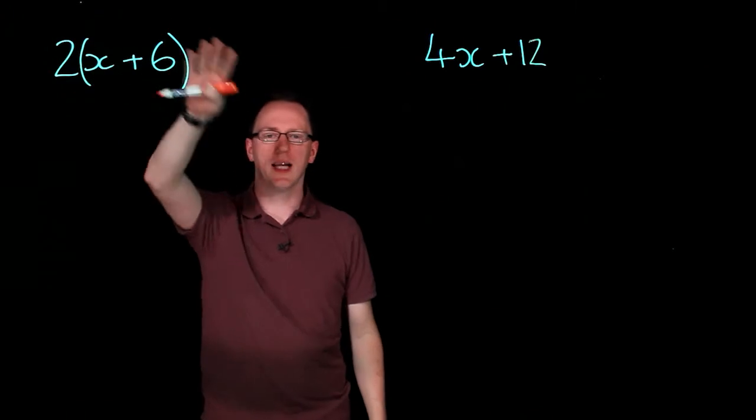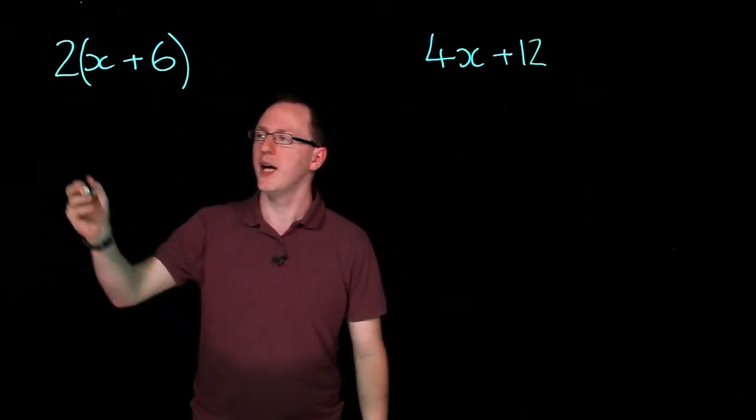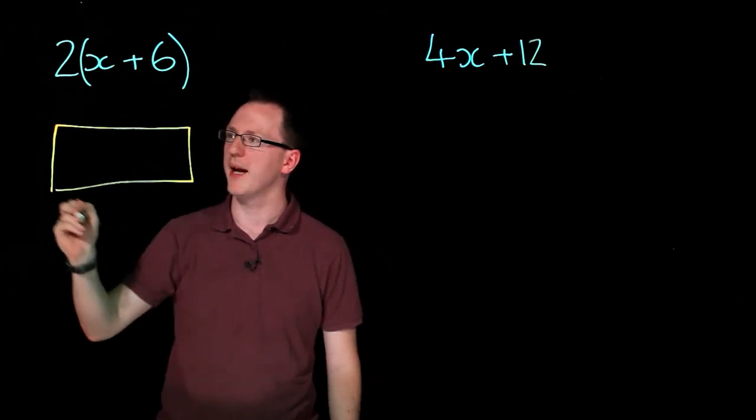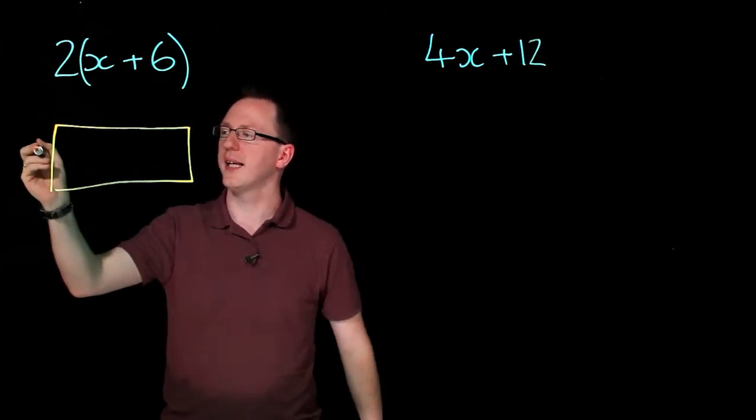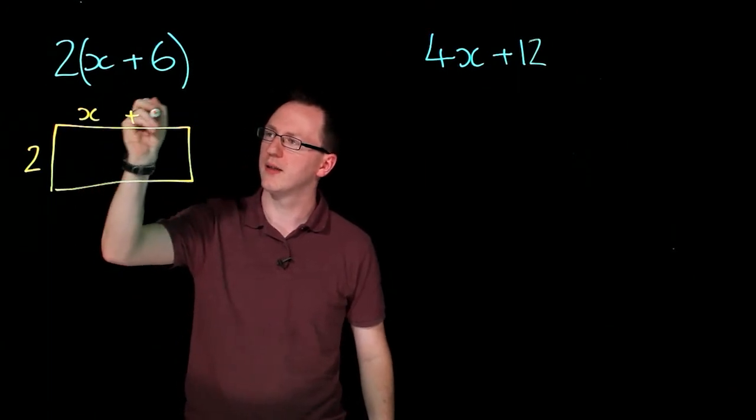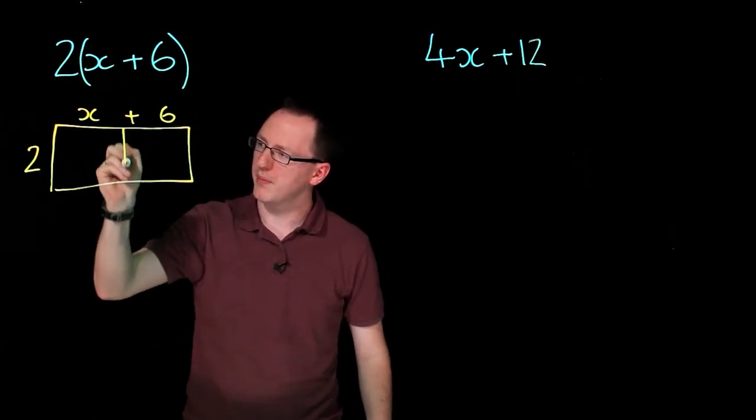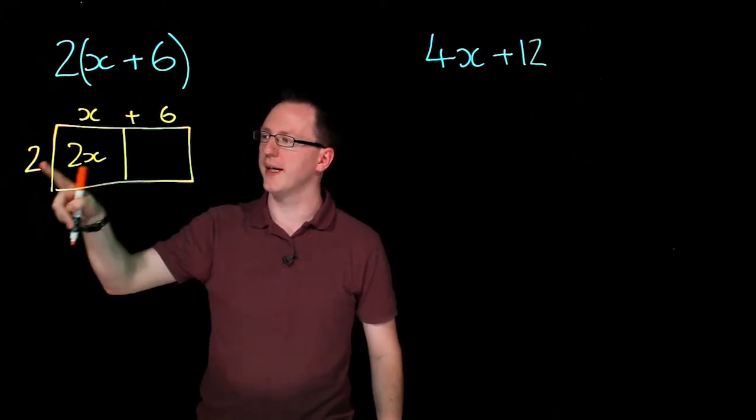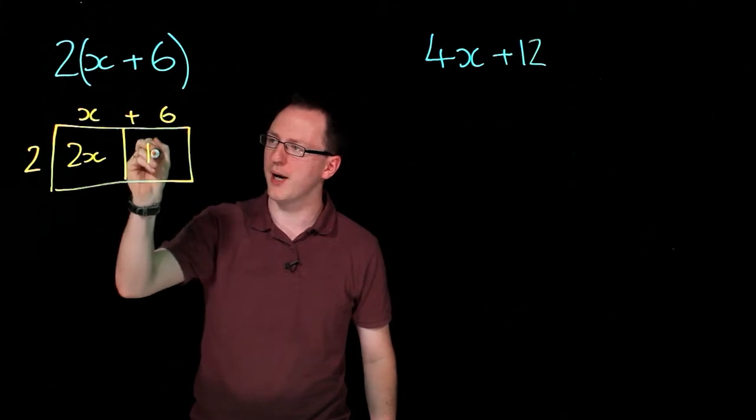We've already seen a bracket like this and to expand it I'm going to use our box method where we visualize this as being a rectangle with side length 2 and other side length x plus 6. So if I split that up I've got this area 2 times x which is 2x and this area 2 times 6 which is 12.